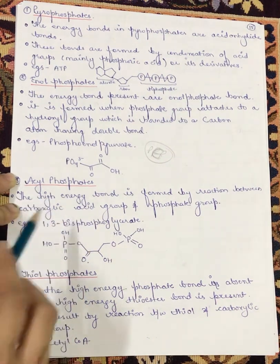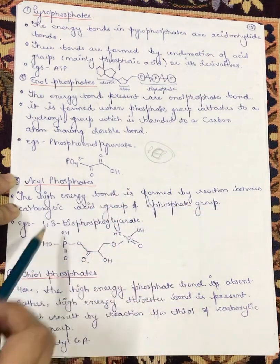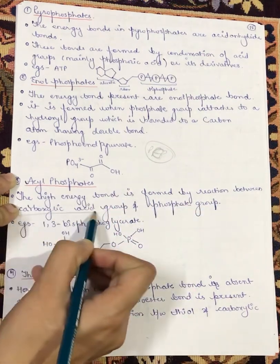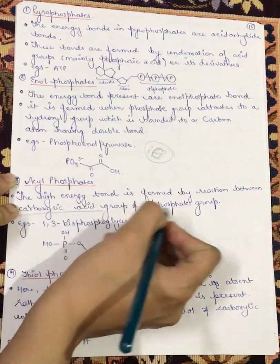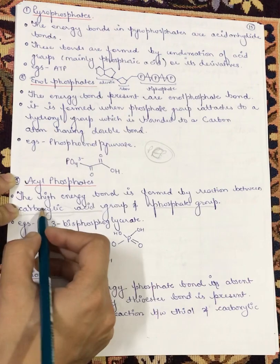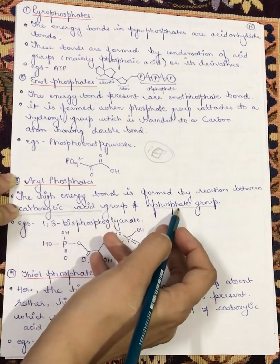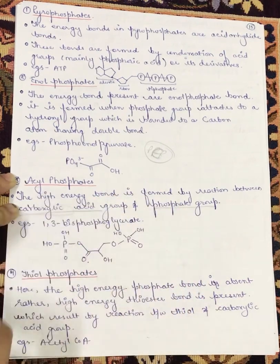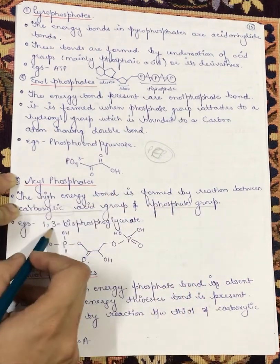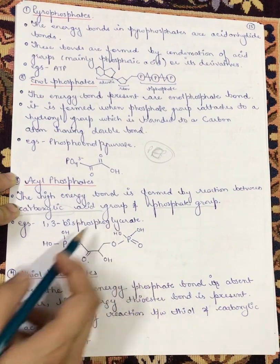Next is acyl phosphates. The high-energy bond is formed by the reaction between a carboxyl acid group and a phosphate group. An example is 1,3-bisphosphoglycerate.